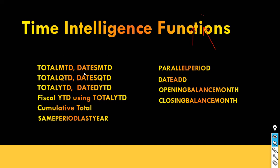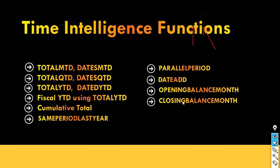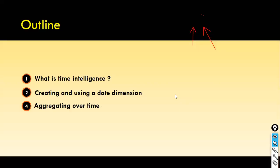We have functions like Total Month-to-Date and Dates MTD — both do the same job but with a subtle syntax difference. Similarly, we have quarter-to-date, year-to-date, and month-to-date functions to accumulate totals. You can also see the same period last year. We will explore all these functions now.